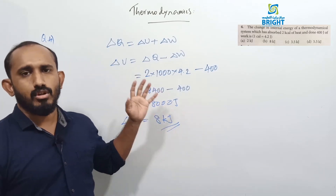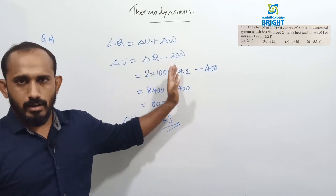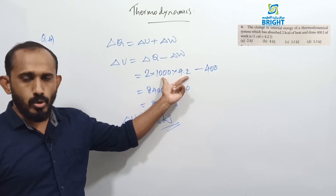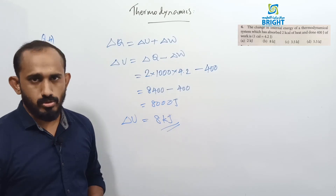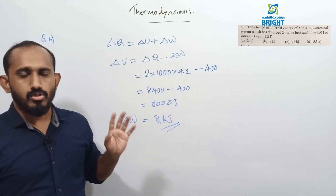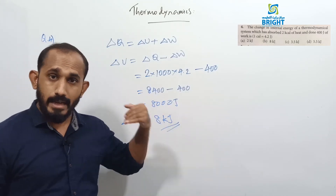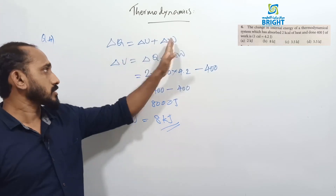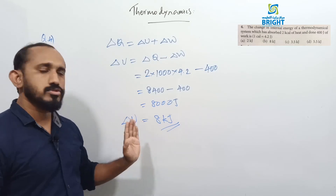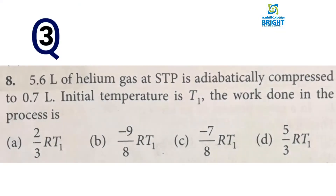This is a direct application of the First Law of Thermodynamics. Note: 1 kcal = 4200 J. Heat absorbed is positive; heat released is negative. Work done by the system is positive; work done on the system is negative — keep these sign conventions in mind.